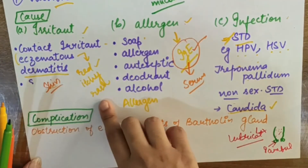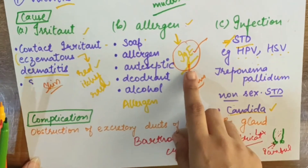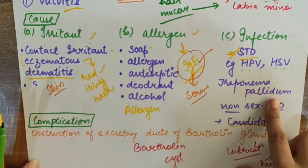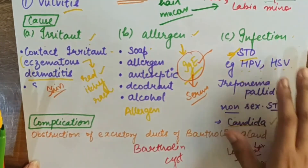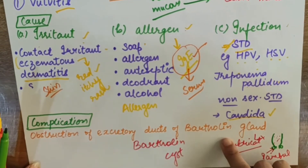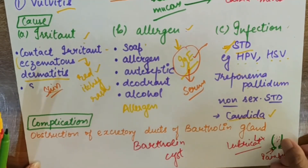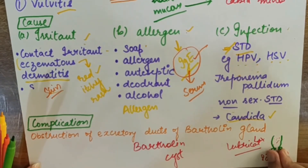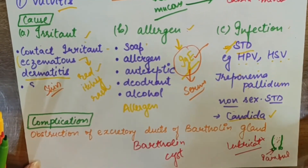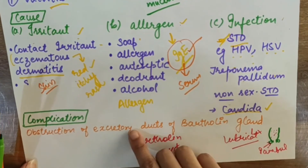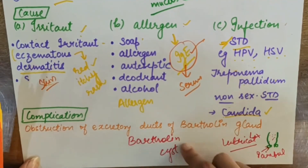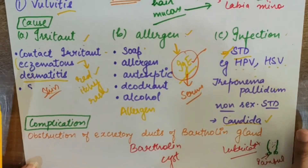Eczema presents as a red, itchy rash - this is a skin-level reaction. Allergen reaction is at the serum level. For infection, STDs include HPV, HSV, Gonorrhea (Neisseria gonorrhoeae), and Treponema pallidum causing syphilis. Non-STD infection includes Candida. A complication of vulvitis is obstruction of the Bartholin glands: the ducts become obstructed, leading to painful dilation and eventually a Bartholin cyst.